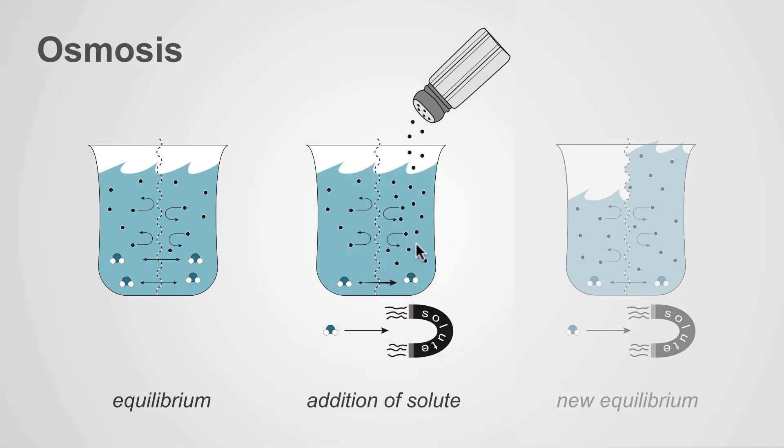If we add solute to one side of this beaker, that's going to increase the osmolality on that side of the beaker, and that solute will act like a magnet drawing water across the semi-permeable membrane, such that there's increased water on the side of that membrane.